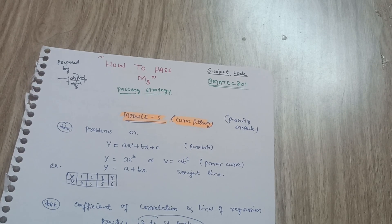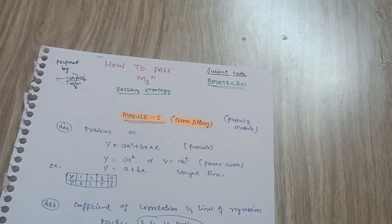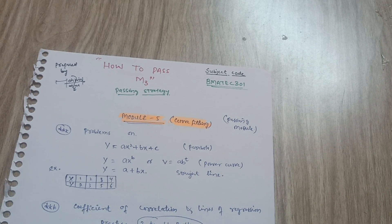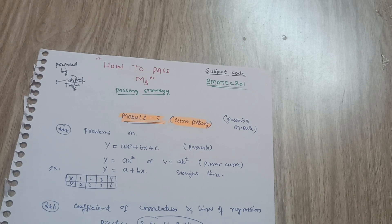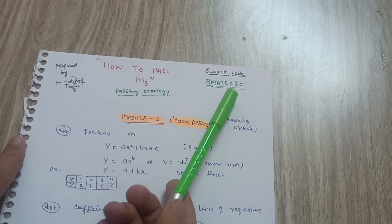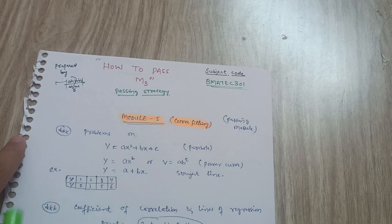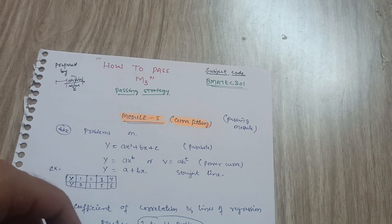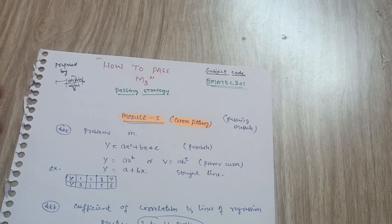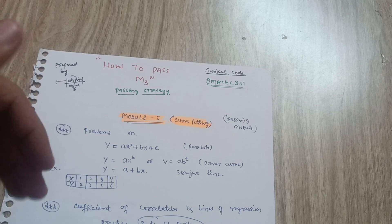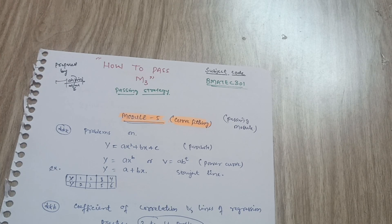Hello, my dear friends, welcome back to my channel. Hope you are all doing well. As exams are very near, today I am presenting the passing package — a passing strategy video for the Mathematics subject M3 for EC students. The subject code is BMAT-EC-301. This video is only for those students who want to pass this subject, not for those who want to score high. I have chosen topics which will definitely help you in passing the examination.